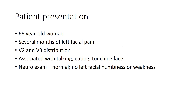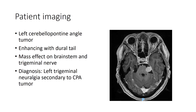Our patient is a 66-year-old woman who presents with symptoms of left trigeminal neuralgia with lancinating pain in V2 and V3 distributions, associated with typical triggers such as talking, eating, and touching of the face. Neurologic examination is normal and the patient demonstrates no facial numbness or weakness. Diagnostic imaging in the form of an MRI with representative axial sequence demonstrates an enhancing mass in the left cerebellar pontine angle, appearing to arise from the tentorium near the petrous apex with mass effect on the lateral aspect of the pons near the root entry zone of the left trigeminal nerve, with mass effect on the nerve as well.